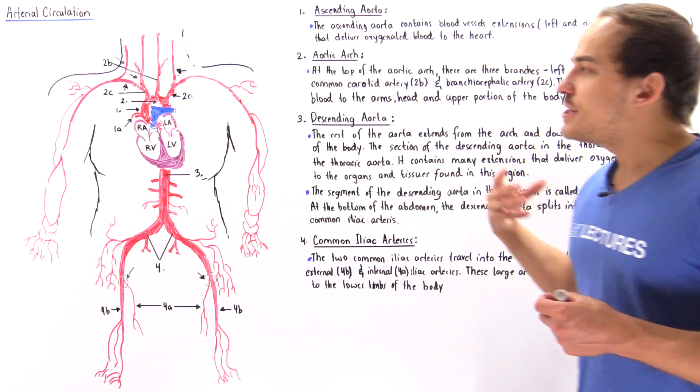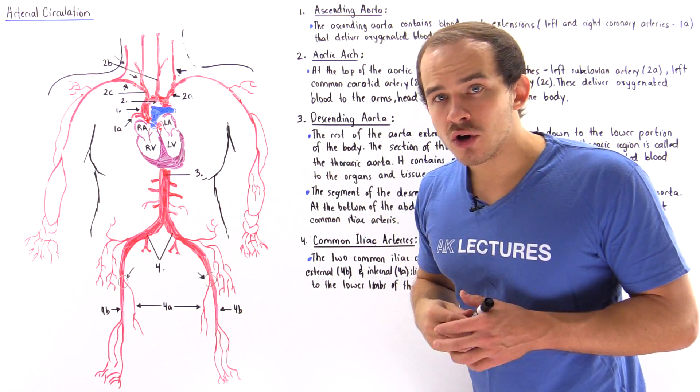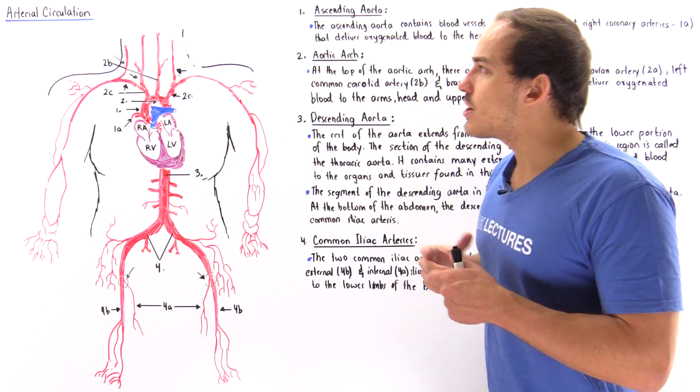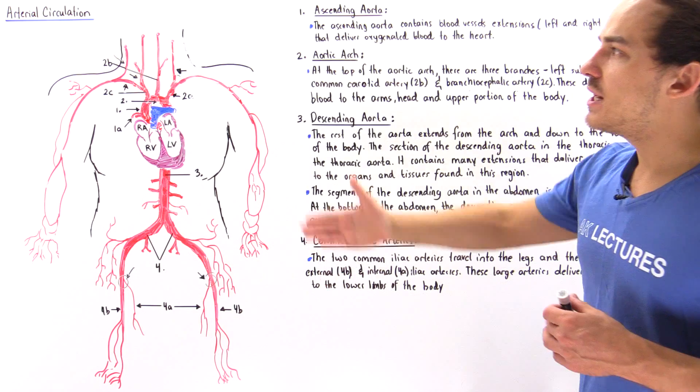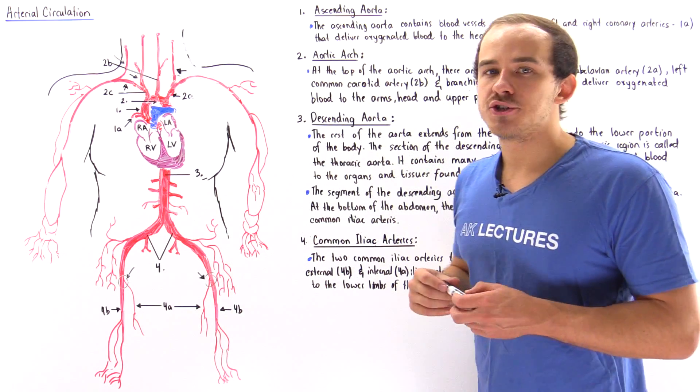These are some of the major arteries found within our arterial circulation system.